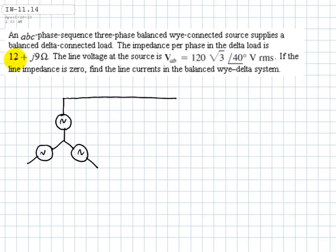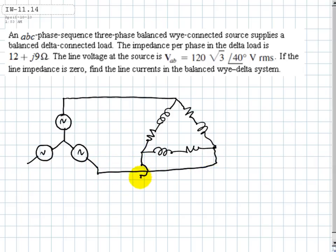Those are resistors and inductors. This is a resistor and an inductor in each one of them. We know that this is 12 and this is j9, and the same is true for all the others.